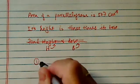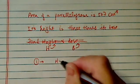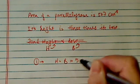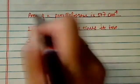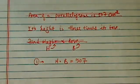So the first sentence says the area, which is height times base, is equal to 507, and that's the clue from the first sentence.